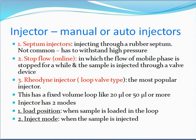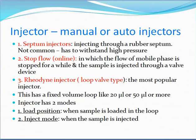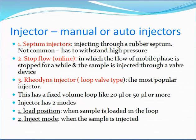The injector can be manual or auto. Types include: the septum injector, where the sample is injected through a rubber septum — not common, as it must withstand high pressure; and the stop-flow injector, where the flow of mobile phase is stopped and the sample is injected through a valve device.